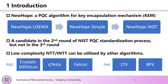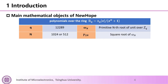such as Crystals-Dilithium, qTESLA, Falcon, LTV, and BFV. The main mathematical objects in NewHope are polynomials over the ring. The modulus Q and the order N are chosen to be special parameters so that the primitive Nth root of unity and its square root exist. In this way, polynomial multiplication in NewHope can be evaluated with NTT and INTT, which are the most time-consuming operations.